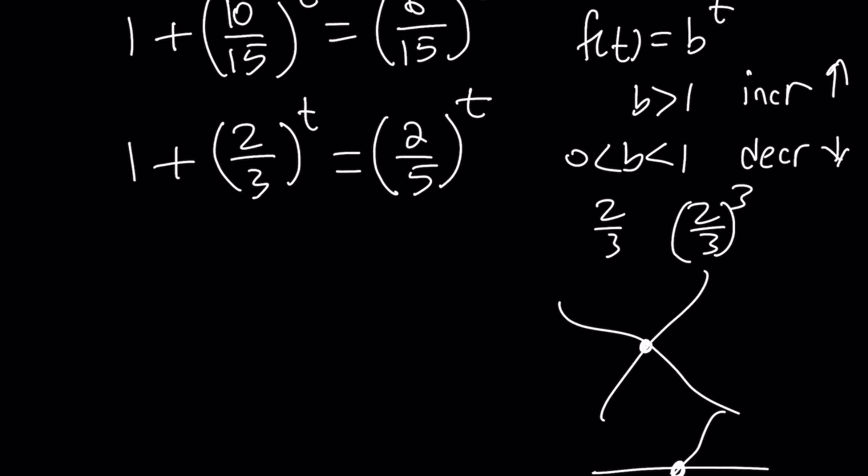But there's another way we can approach this. We have a 1 plus on the left-hand side, so the left-hand side is actually greater than 1. Two-thirds to the power t for real values of t is going to be greater than 0, positive for sure. So when you add 1 to it, the sum is going to be greater than 1. But notice that this side is less than 1. Why? Because I have two-fifths and I'm raising it to powers.